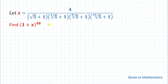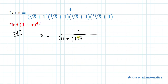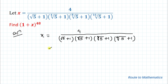Our first step is to simplify the value of x so that our calculation becomes a bit simpler. So without any delay let's start the solution. To simplify x, let's take y equal to the 16th root of 5. This implies 5 equals y to the power 16. Now let's put the value of 5 into the given expression.